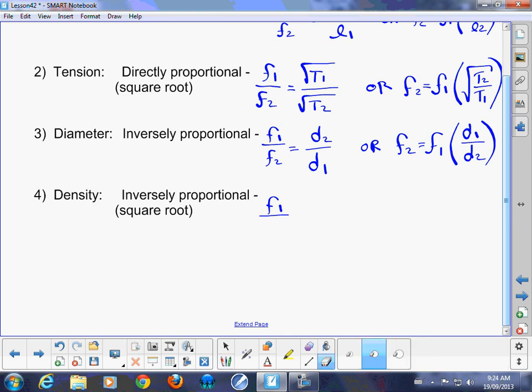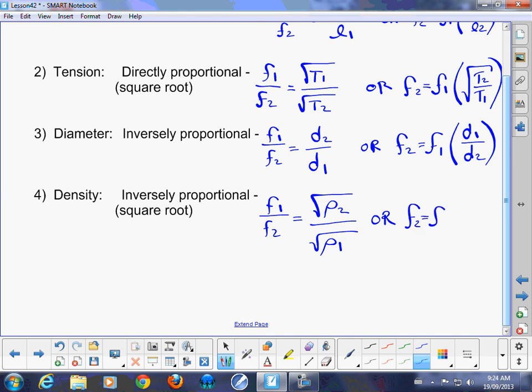So density, inversely proportional square root, which simply means that new frequency compared to old frequency is the square root of the old density divided by the new density, divided by the square root of the old density.